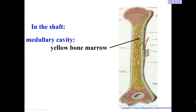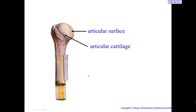If a bone looks long but there is no cavity in the shaft, it is not classified as a long bone. On one end, the superior end, the surface is very smooth — it is covered by articular cartilage. For example, the head of the humerus connects with the scapula to form our shoulder joint, so this surface is covered by a very smooth articular cartilage.